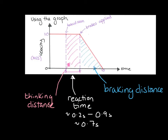The reaction time varies from person to person. It can vary from around 0.2 seconds for someone like a fighter jet pilot, up to much longer for someone half asleep. On average, the normal reaction time for most people is 0.7 seconds.